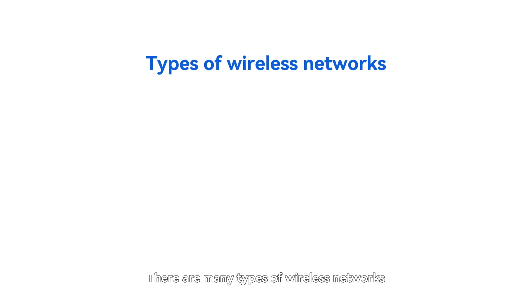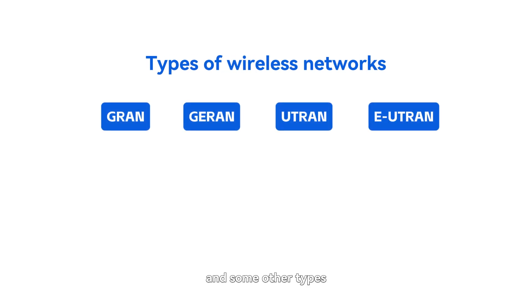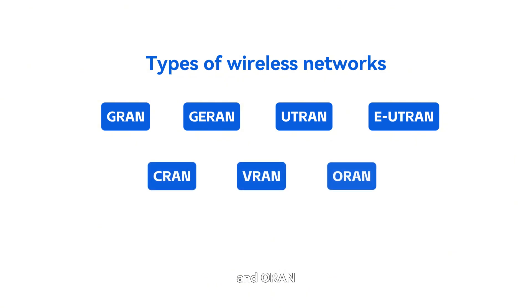There are many types of wireless networks, mainly GRAN, GARAN, UTRAN, EUTRAN, and some other types such as CRAN, VRAN, and ORAN.